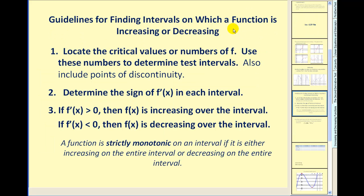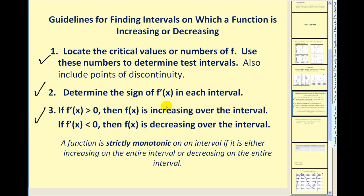Here are the guidelines for finding intervals for which a function is increasing or decreasing. Step one: locate the critical values of the function and use these to determine the test intervals, including any points of discontinuity. Step two: determine the sign of the first derivative in each interval. Step three: draw conclusions — if the derivative is positive the function is increasing; if negative, it's decreasing.